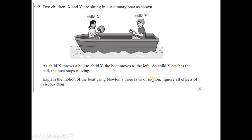Two children X and Y sit in a stationary boat. As child X throws a ball to child Y, the boat moves left. As child Y catches the ball, the boat stops. Explain this using Newton's three laws. When X throws the ball, X exerts a force on the ball; by Newton's third law the ball exerts an equal and opposite force on X, and therefore on the boat, giving a resultant force leftward.